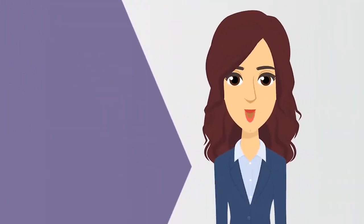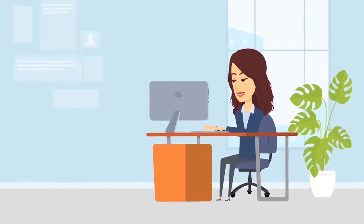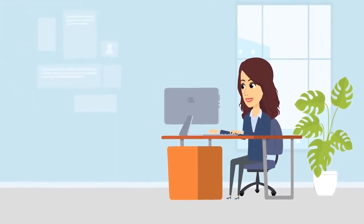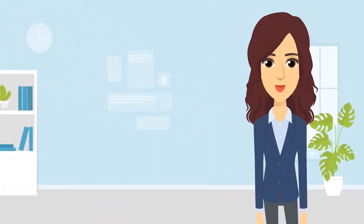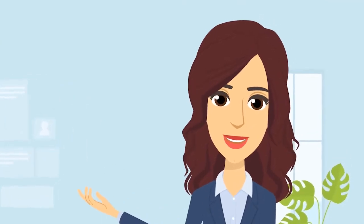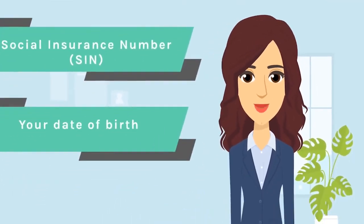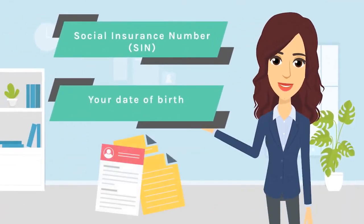To open a TFSA, you must do both of the following: contact your financial institution, credit union, or insurance company, and provide the issuer with your SIN and date of birth. Your issuer may ask for supporting documents.